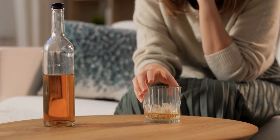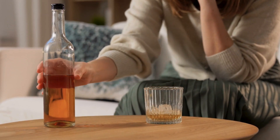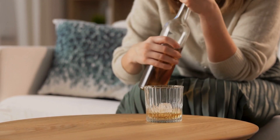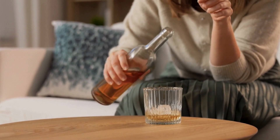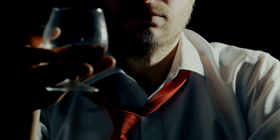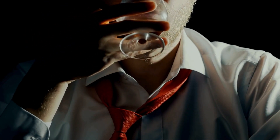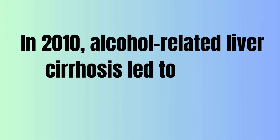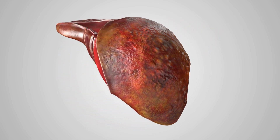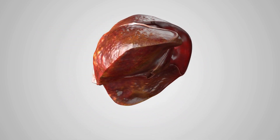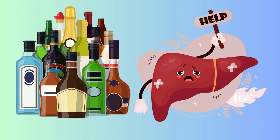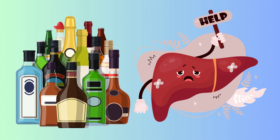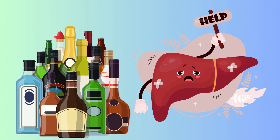According to a 2020 PMC publication, alcohol is a leading cause of severe liver disease and is responsible for half of all deaths related to liver cirrhosis. In 2010, alcohol-related liver cirrhosis led to nearly 500,000 deaths worldwide, and liver disease accounted for 50% of alcohol-attributable deaths. The real impact of alcohol liver disease might be much bigger than we know because it's often underreported.